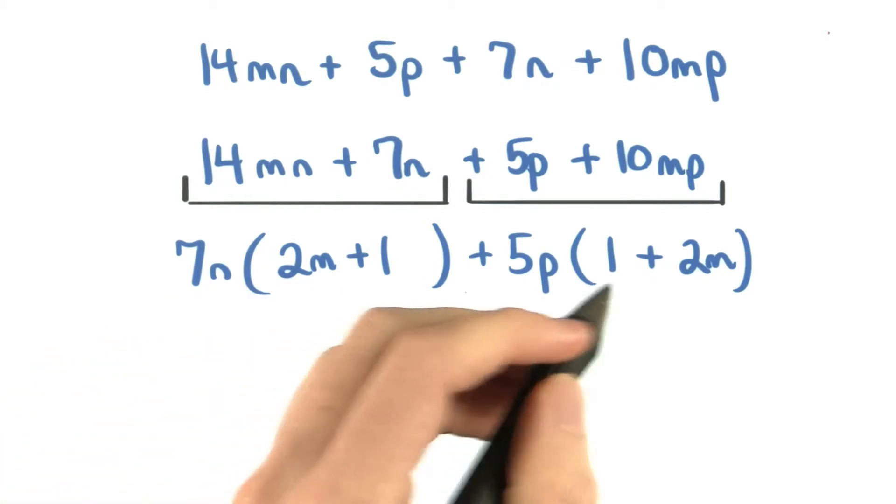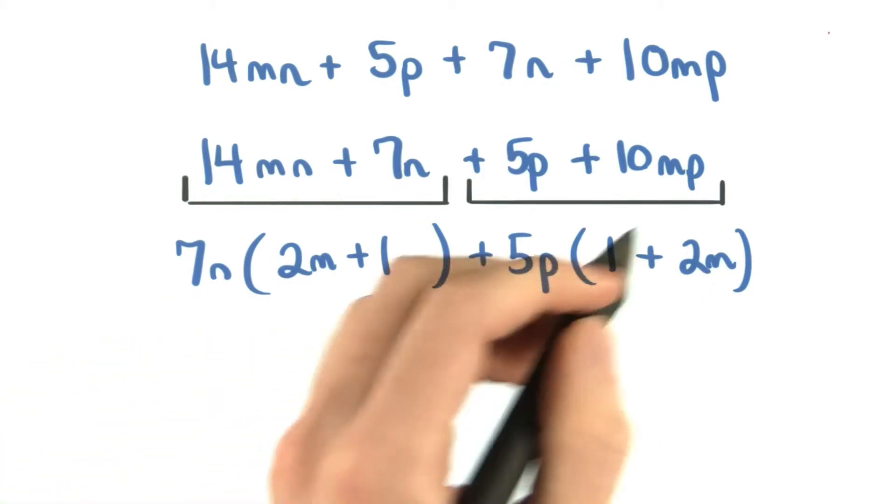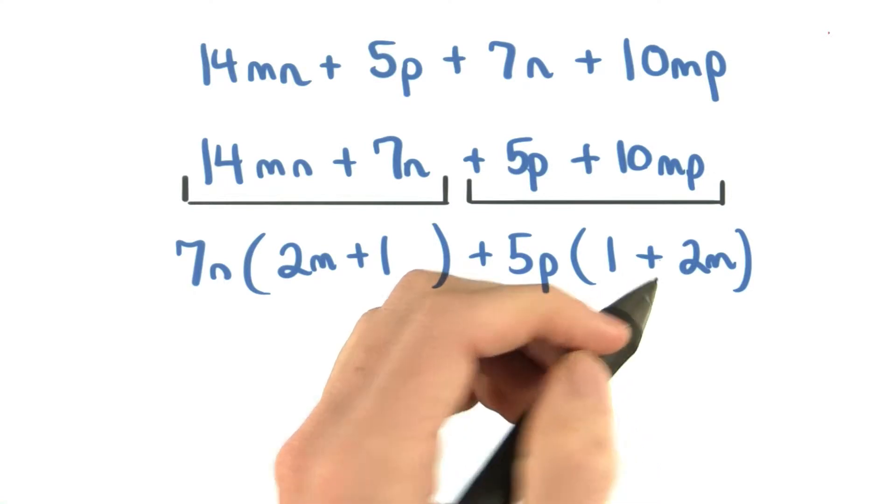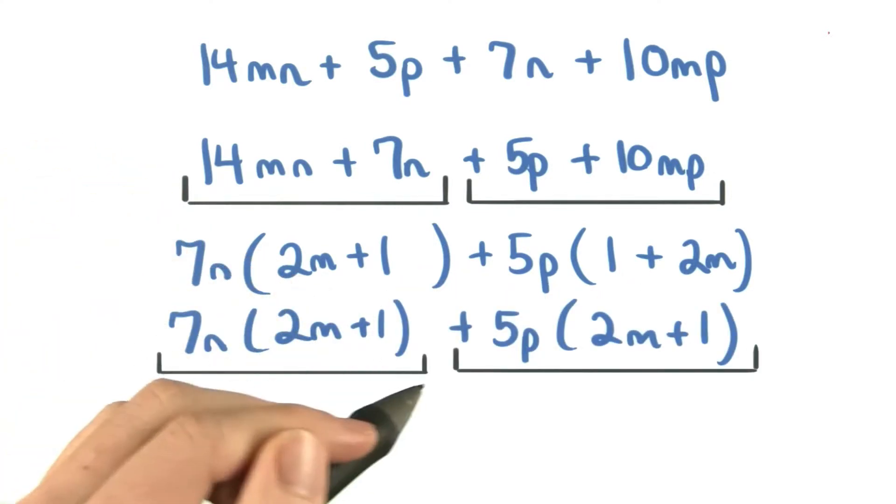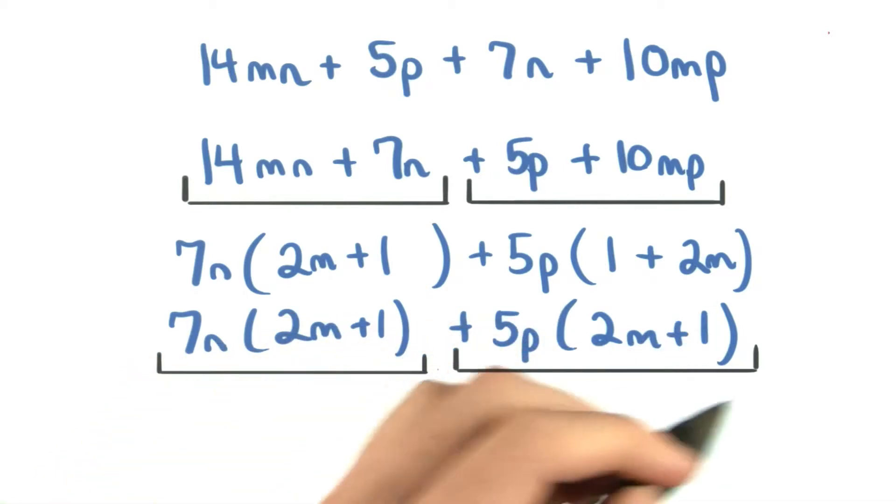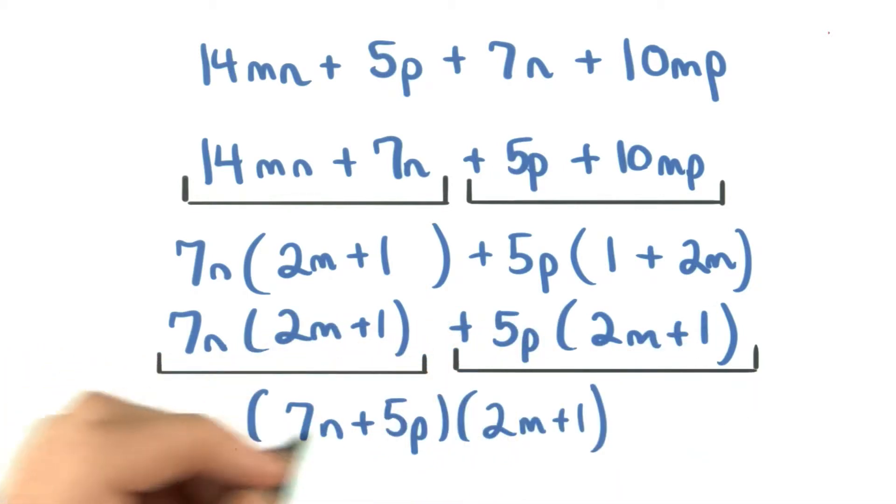These two factors might appear different, but we just want to switch the order of these two terms. Remember, addition is commutative. Now we can see there's a common factor of 2m plus 1 in the first term and 2m plus 1 in the second term. We factor again, which leaves us with our factored form: 7n plus 5p times 2m plus 1.